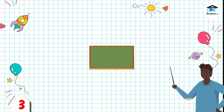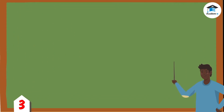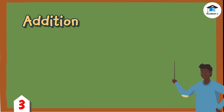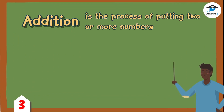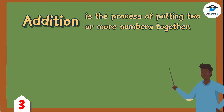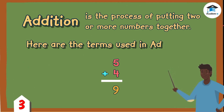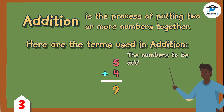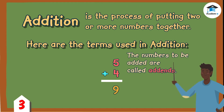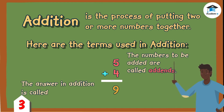What do you mean by addition? Addition is the process of putting two or more numbers together. The numbers to be added are called addends. The answer in addition is called sum or total.